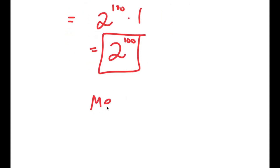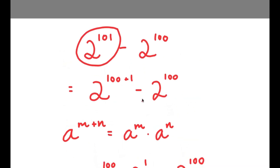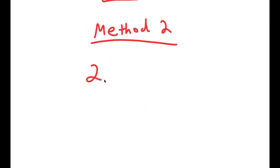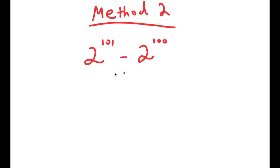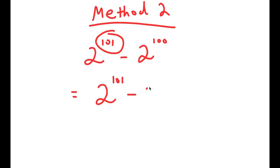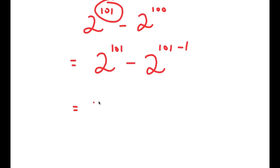Now, there is actually another method of solving this problem. Going back to the problem, I have 2 to the power of 101 minus 2 to the power of 100. Before, I rewrote 101 as 100 plus 1, but how about I rewrite 100 as 101 minus 1? So now I get 2 to the power of 101 minus 2 to the power of 101 minus 1, which is the same thing as 2 to the power of 101 minus 2 to the power of 101 plus negative 1.